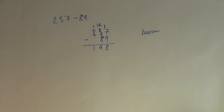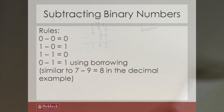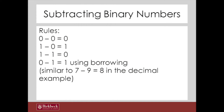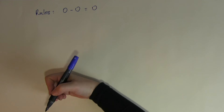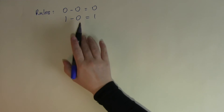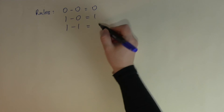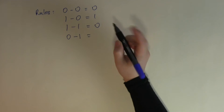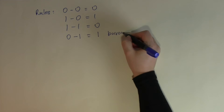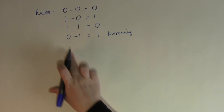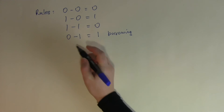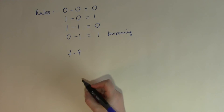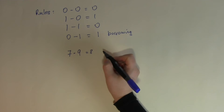So how are these rules going to change in binary? We were doing the subtraction digit by digit. The rules for binary: 0 take away 0 is 0, because I'm taking away nothing from nothing. 1 take away 0 is just 1, because I'm taking nothing away from 1. 1 take away 1 is 0. The tricky bit is 0 take away 1 — that will be 1 but with borrowing. This is similar to what we did in the 7 minus 9 part of the decimal example previously.